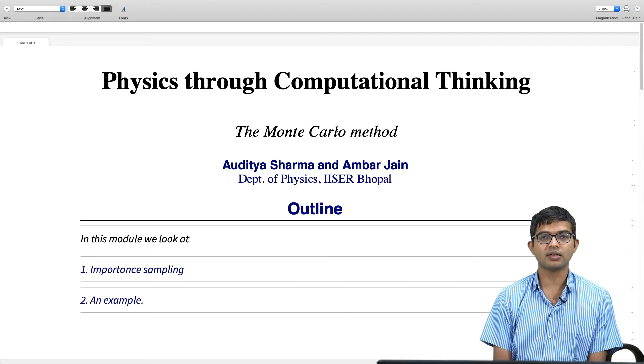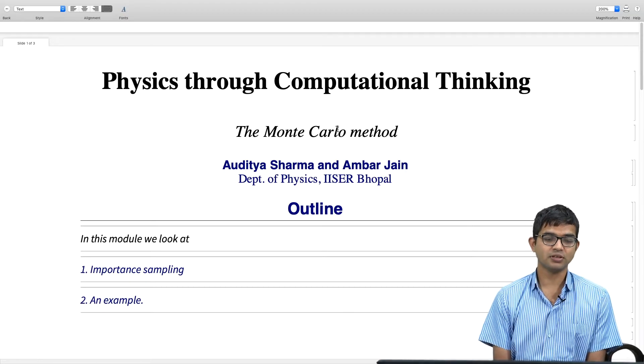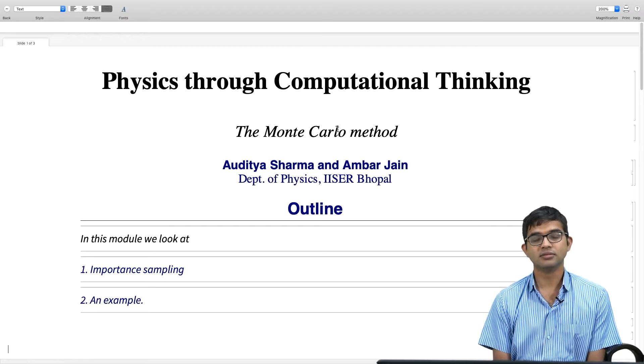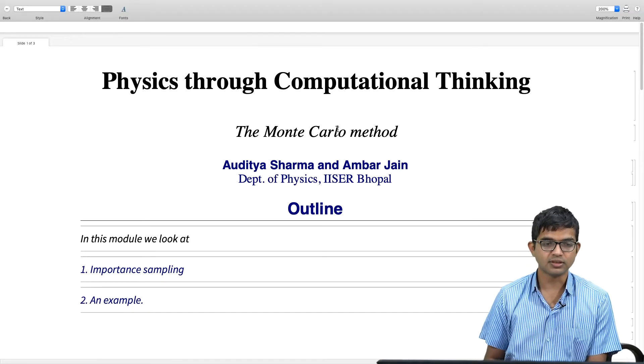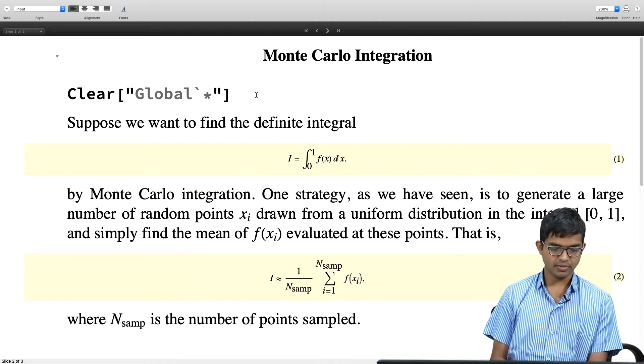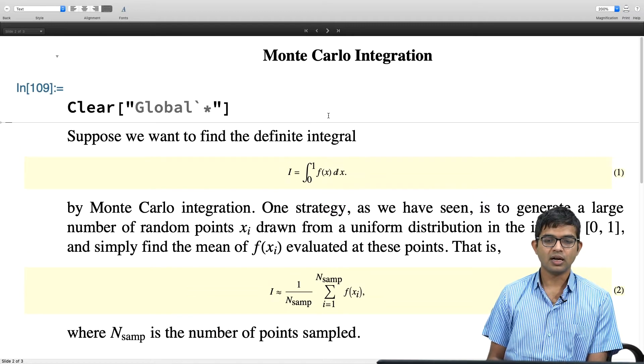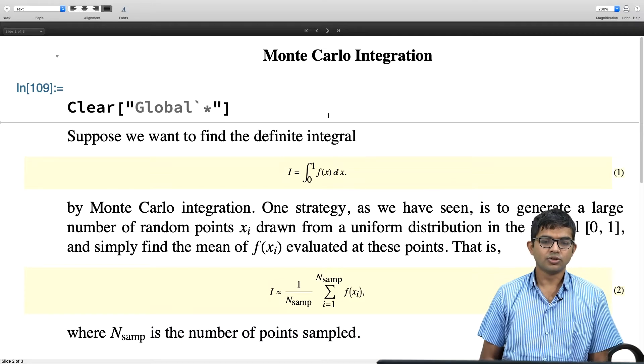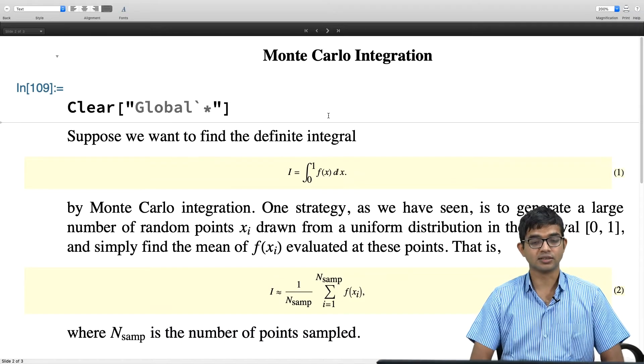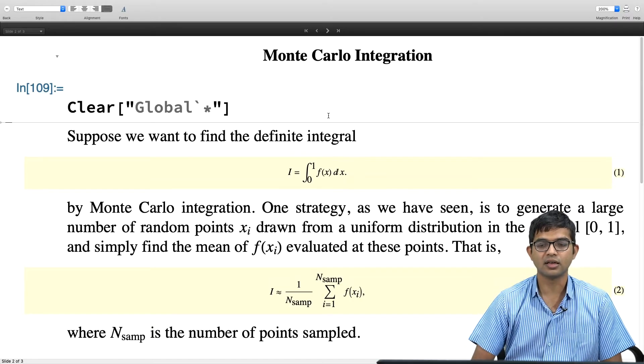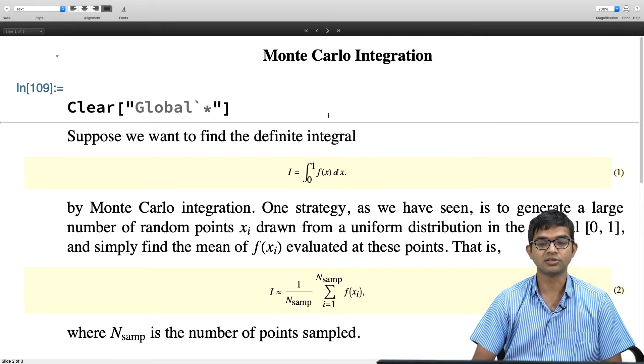We will look at just the prescription, not really the theory of it, and then we will try to apply it to an example which we have already seen. Alright, so I will start by clearing all this stuff, clear global. So what is the idea of this Monte Carlo integration? We have seen this last time, we have implemented it. Let us try to rationalize this.